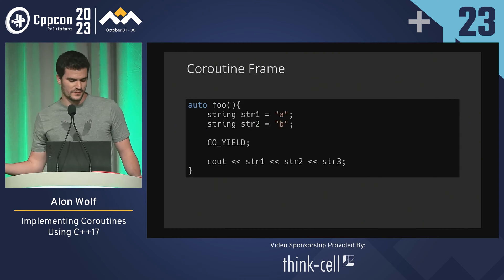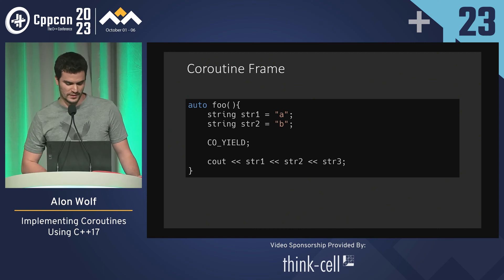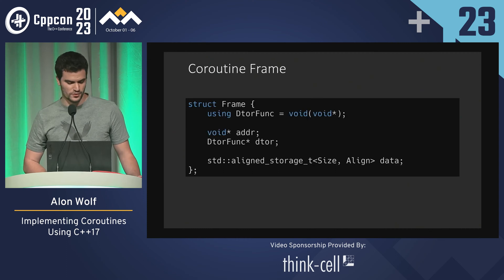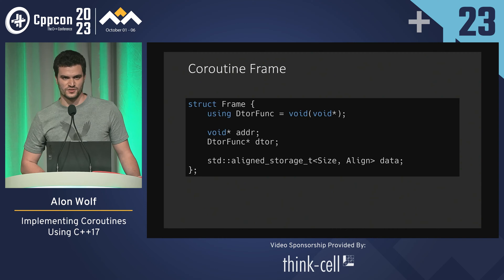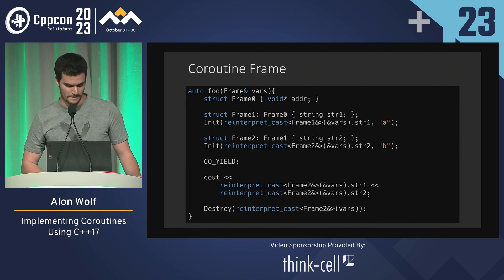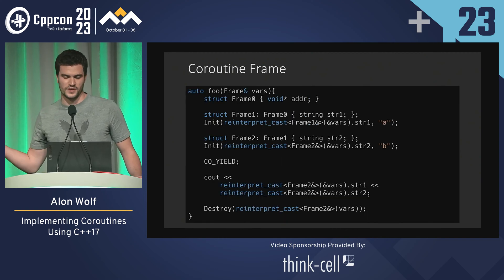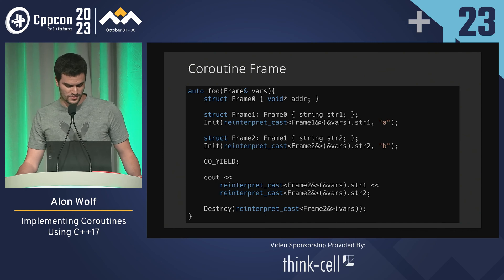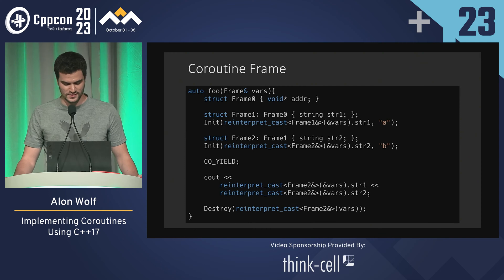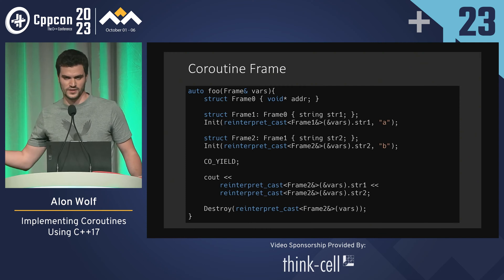We can't declare variables inside the coroutines regularly because they will be destroyed when we exit through the yield. So we need a coroutine frame which contains the address of where we paused and the storage of all the local variables. Whenever I declare a variable, I also define a struct that contains the local variable and inherits from the previous frame.